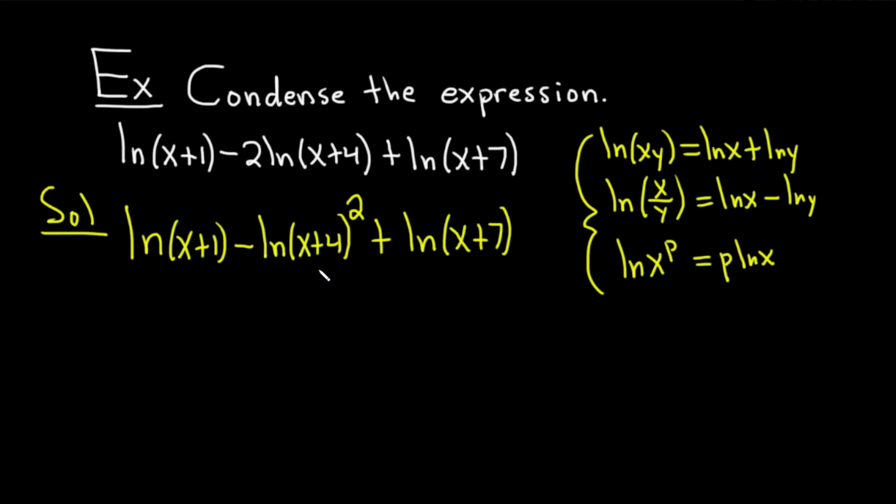It's important to be careful here. I've noticed that most people skip a lot of steps when they do these. That's fine. Just be careful. Just make sure you get it right. So this is equal to, so the minus sign here is going to turn it into a fraction using the quotient rule. It'll be the natural log of x plus 1 over x plus 4 quantity squared.